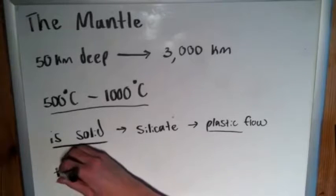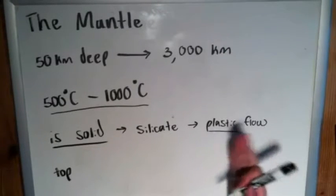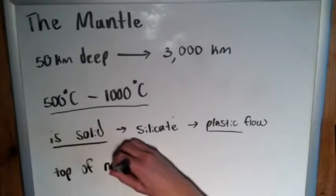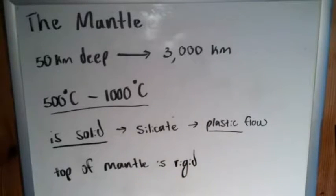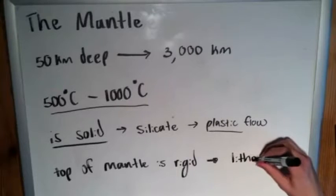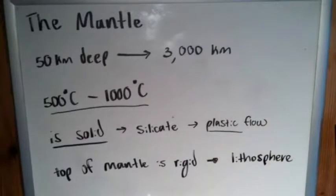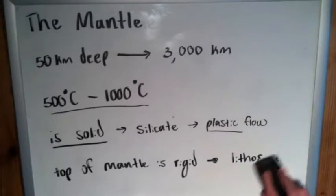One final note: the top of the mantle — where it touches the crust at that boundary, and a small distance downward — that very top sliver of the mantle is rigid. That top piece, along with the crust, forms what's known as the lithosphere, which is a topic for another day, and it lies directly on top of the asthenosphere. Just know that the mantle is technically solid, just in a constant state of flowing in a semi-solid, liquidy way, and the top of the mantle is rigid and together with the crust forms the lithosphere.